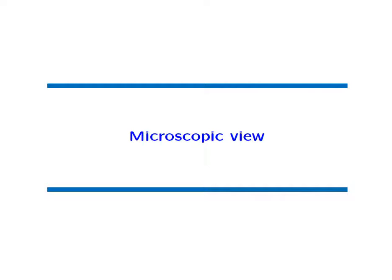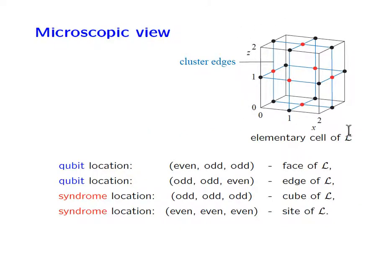Applying the threshold theorem to fault-tolerant quantum computation with 3D cluster states, there is a microscopic view and a macroscopic view. Beginning with the microscopic view: what you see here is the elementary cell of the three-dimensional cluster state, which is repeated over and over in each of the three spatial directions. The dots represent the qubits — you have qubits sitting on the faces of the elementary cell and qubits sitting at the edges, but no qubits in the corners or the center of the cube. The blue lines indicate the corresponding graph state edges, telling you which qubit is entangled with which.